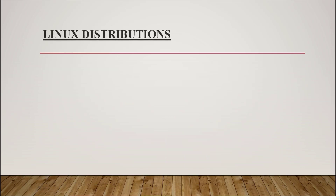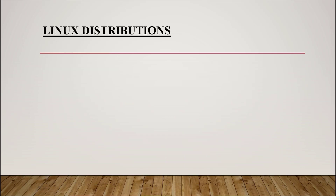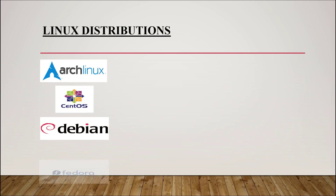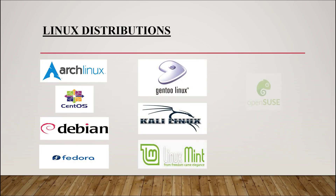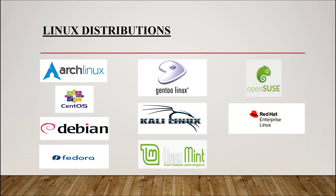Linux has many distributions, and here are some of them: Arch Linux, CentOS, Debian, Fedora, CentOS Linux, Kali Linux, Linux Mint, OpenSUSE, and Red Hat Enterprise Linux — which is the commercial version of CentOS. We'll be doing our practice on CentOS and Ubuntu.